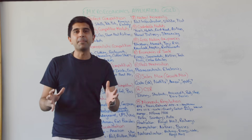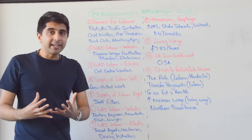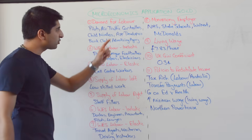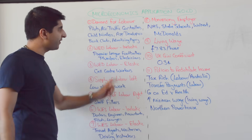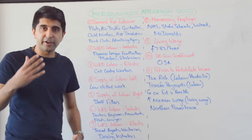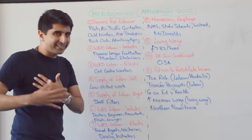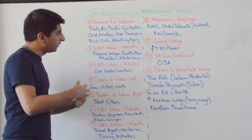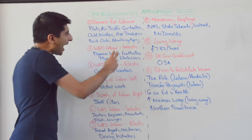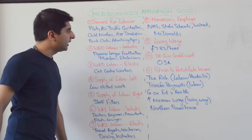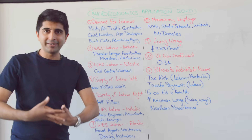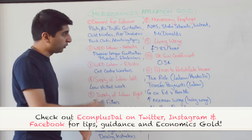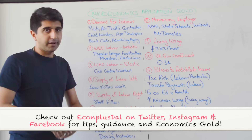Let's finish by looking at labour market applications. Labour markets where demand has shifted right for certain workers: pilots, air traffic controllers, child minders, and app developers. For the first three it's more demand for the final product, whereas for app developers it may also be an increase in price of the final product. Demand shifting left for bank clerks and advertising agency workers — more companies are looking to do their advertising in-house rather than hiring advertising agency workers, keeping costs low.